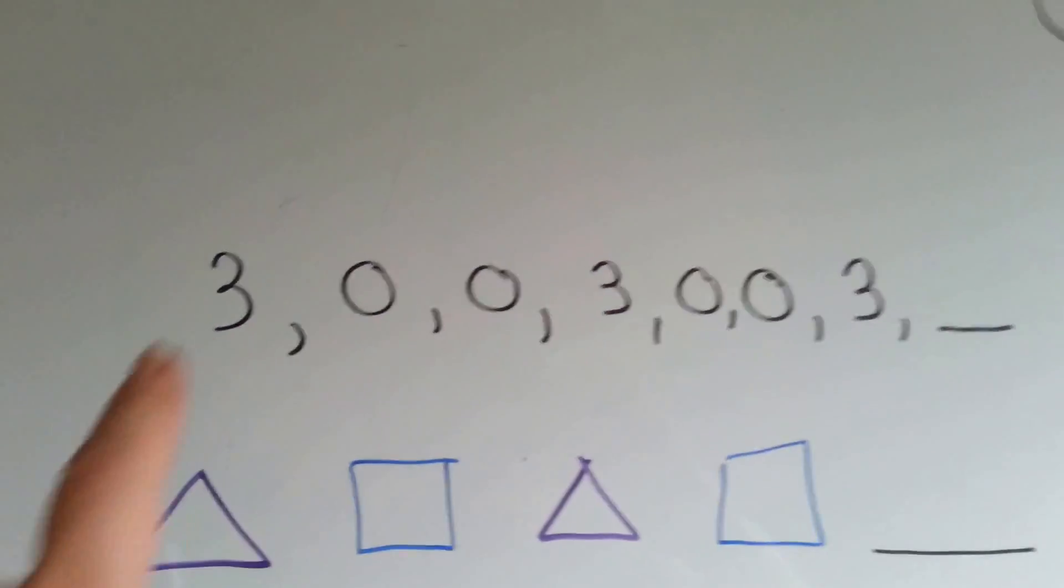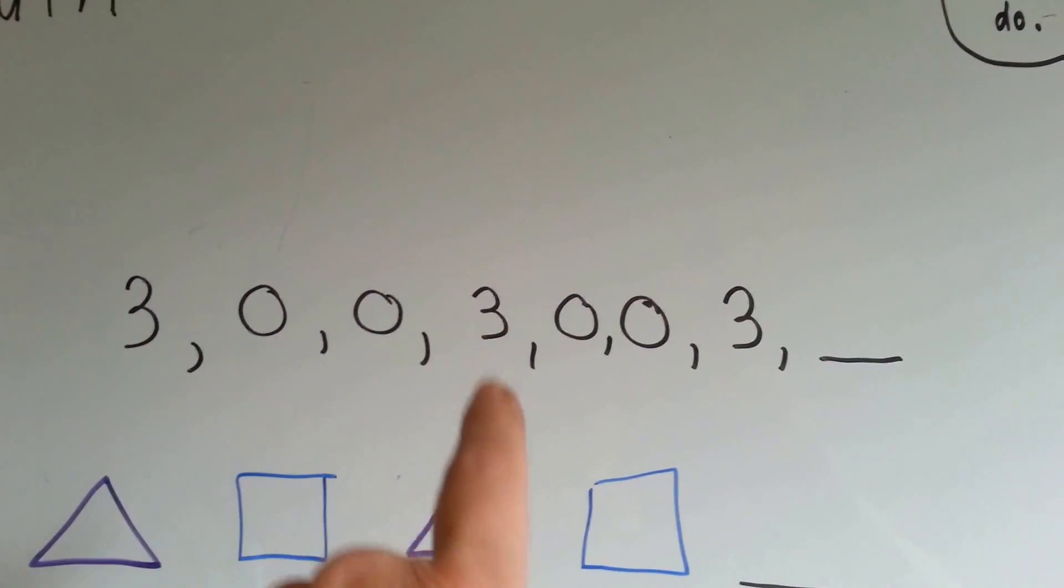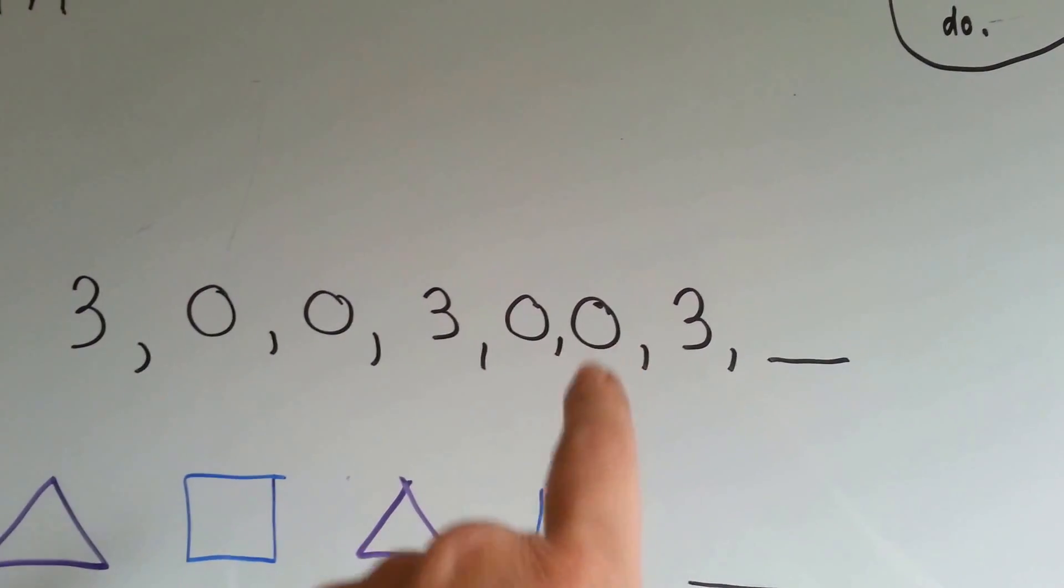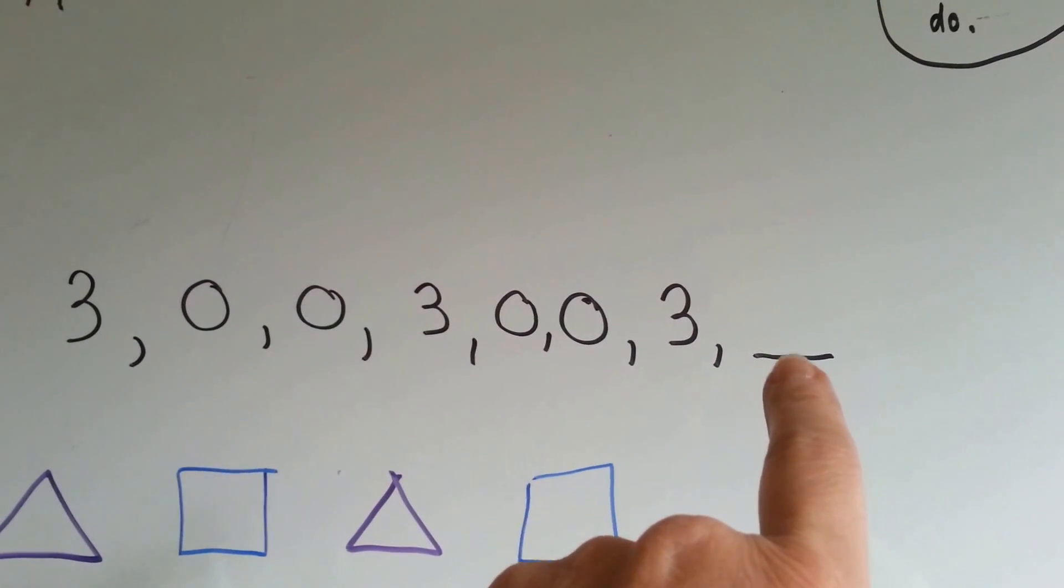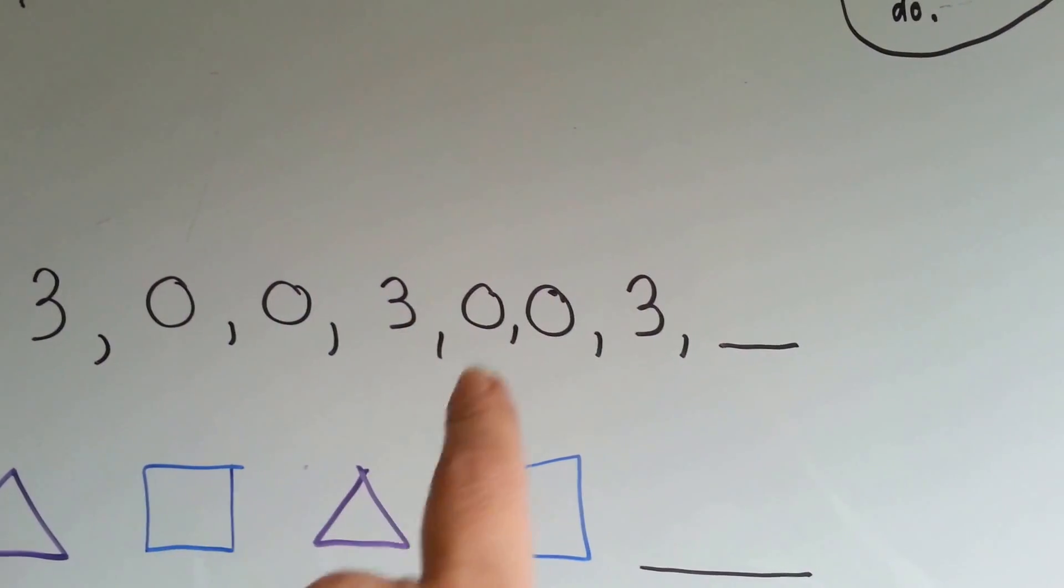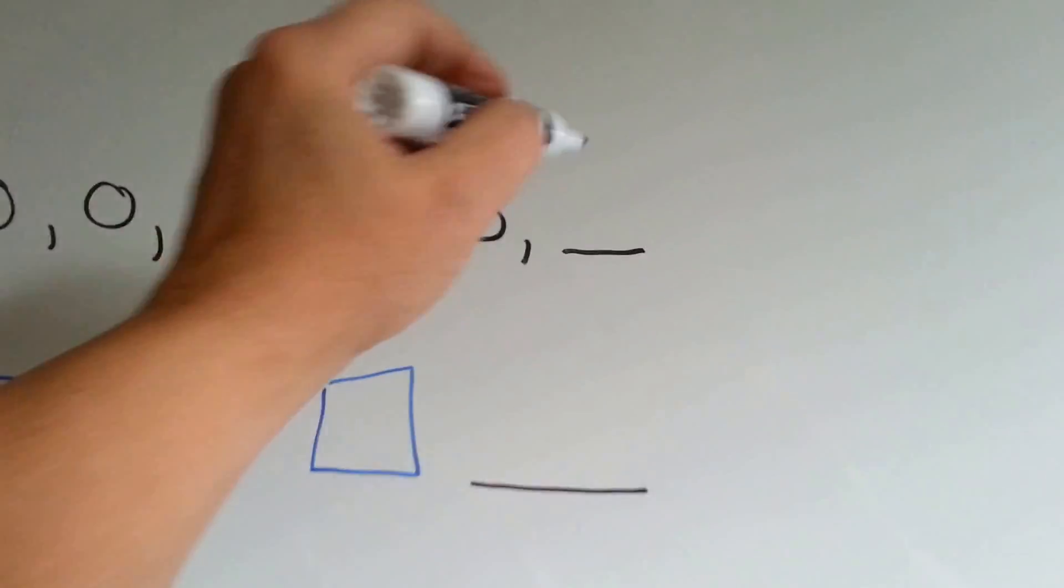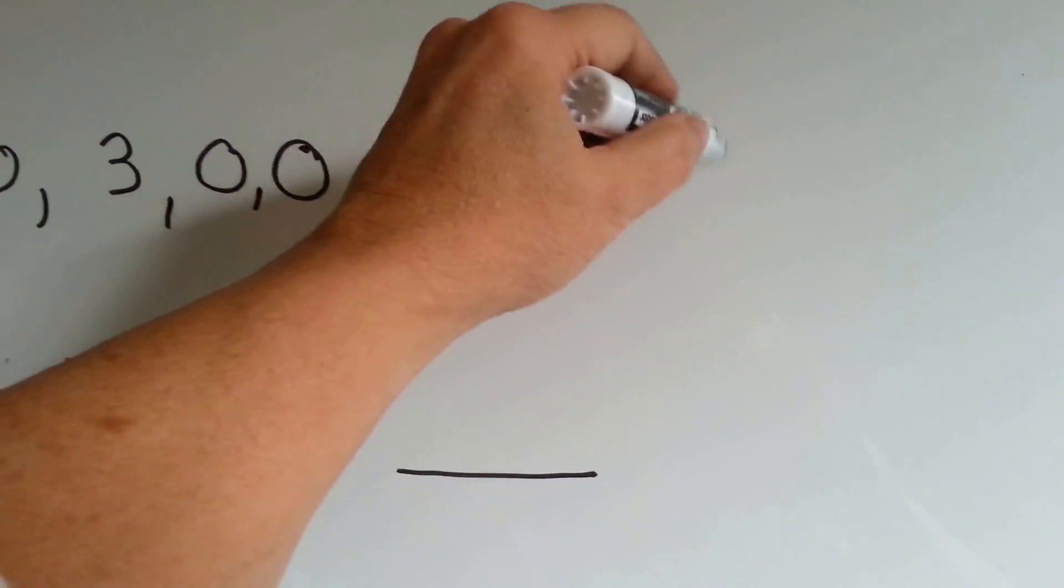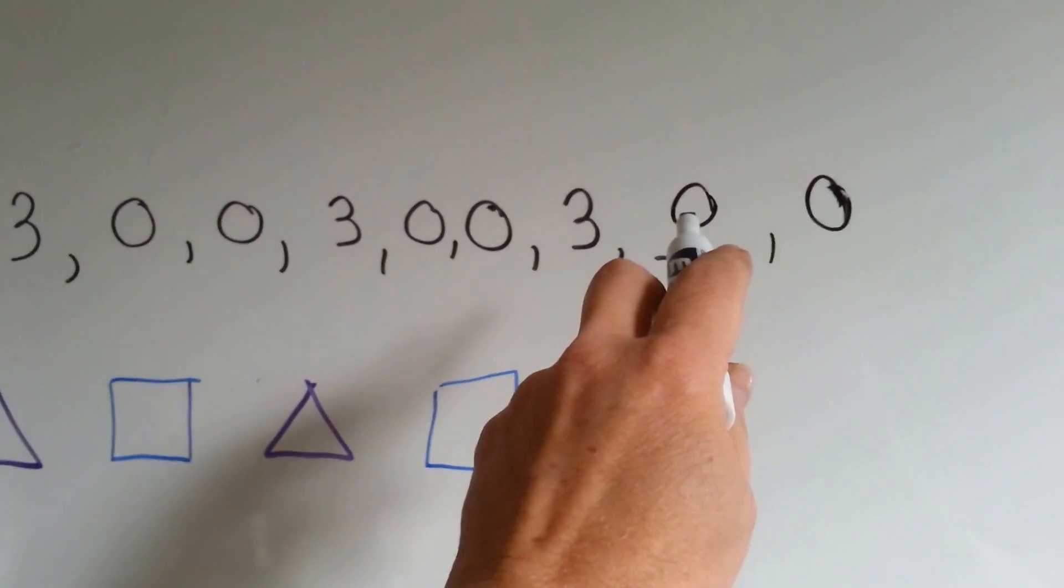Look at this. Three, zero, zero. Three, zero, zero. Three, what do you think is going to come next? Do you see the pattern? Three, zero, zero. Three, zero, zero. Three, zero, and then a zero, right? So the pattern told us that a zero was going to come next.